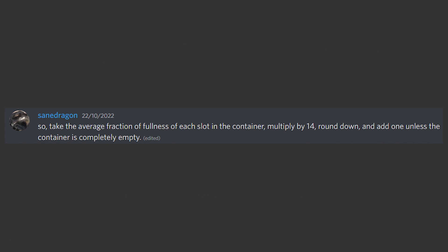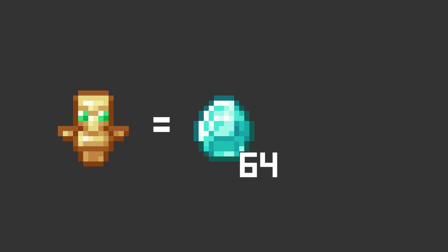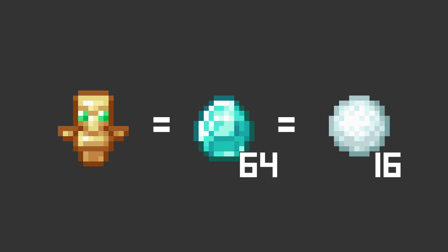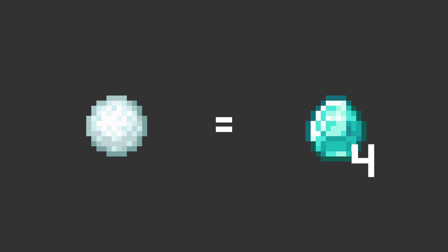In simple terms, thank you to sandragon for this, it takes the average as a fraction of fullness for every slot in the container, multiplies it by 14 and rounds down, then adds 1 if the container is not empty. What's important to note is that it measures each slot as a fraction of its maximum stack size. So 1 non-stackable item is equivalent to a full 64 stack for most items, or a full 16 stack for things that stack to 16. 1 of a 16-stackable item is equivalent to 4 of a 64-stackable item.